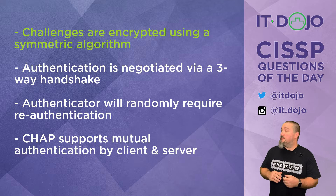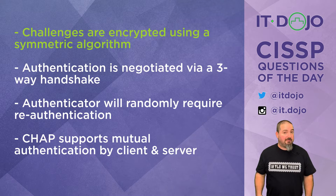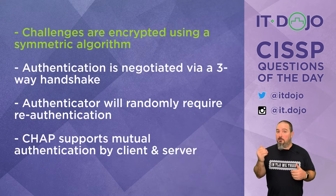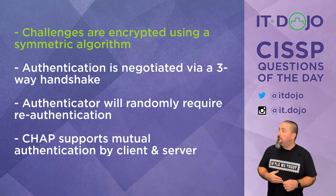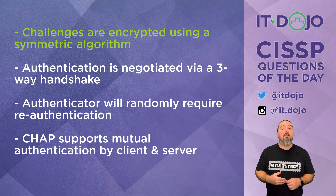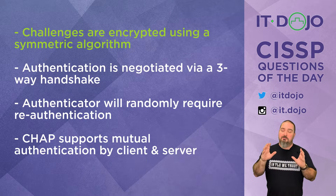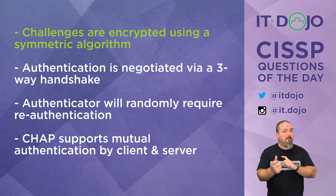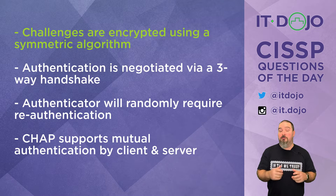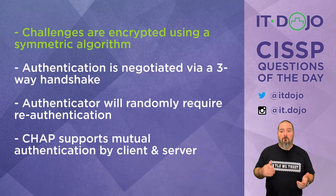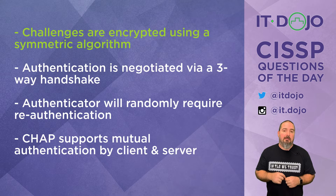Answer choice number three says that the authenticator will periodically or randomly require re-authentication — totally true. You connect, do the whole CHAP three-way handshake, prove you know the password, and then every now and then the authenticator will require you to re-authenticate again. The reason is that if somebody intercepted the connection and took your spot, this minimizes how long that can persist before the link is terminated. It doesn't happen on a predefined timeline — it is random.